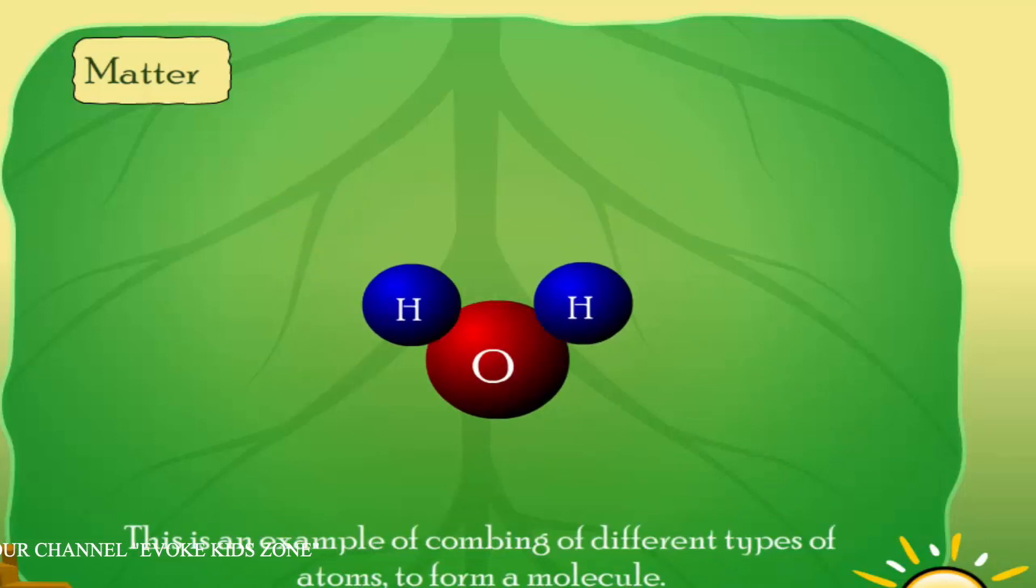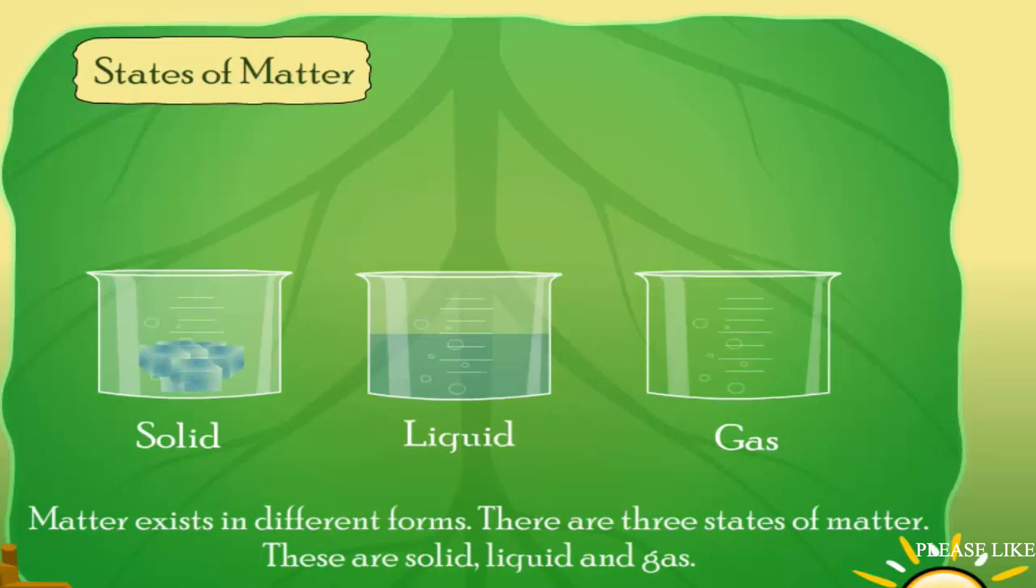This is an example of combining different types of atoms to form a molecule. Matter exists in different forms. There are three states of matter: solid, liquid, and gas.